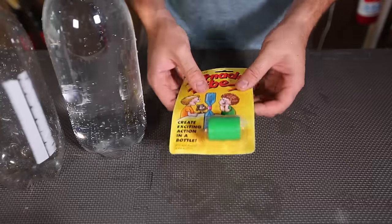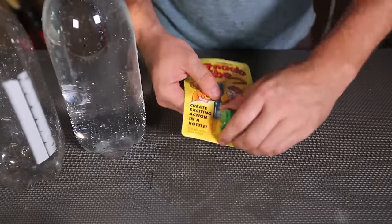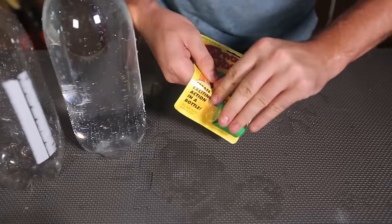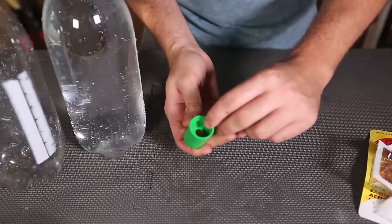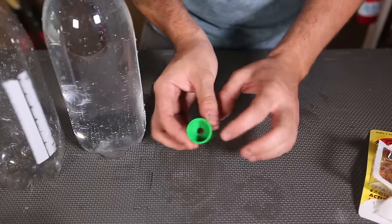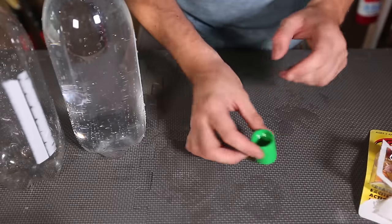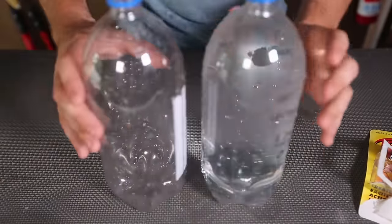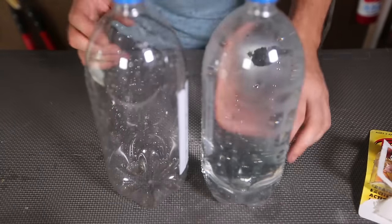For this science experiment, we got here tornado tube. Let's see what it's all about. As you can see, it screws on on one side, and screws on the other side, and there is a hole over here. So we will need two bottles, one full and one empty. This is two liters.